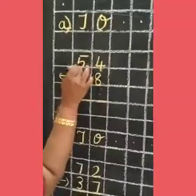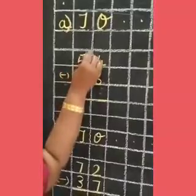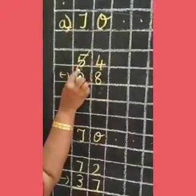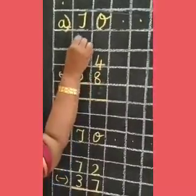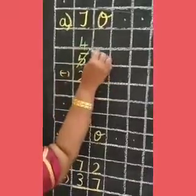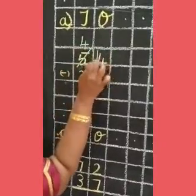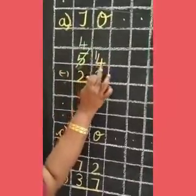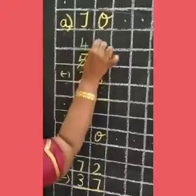So I am borrowing from the tens. Before 5, what will come? 4. So we have to give one number to the ones place. So what is this? 14.